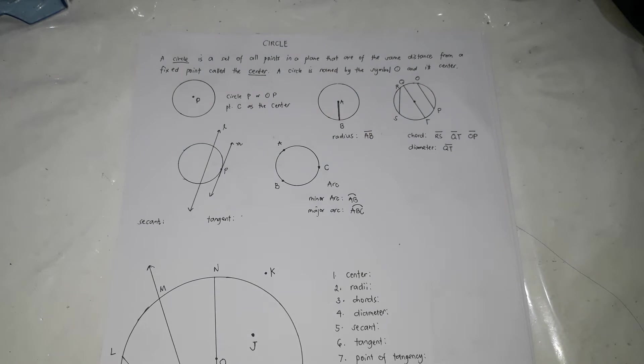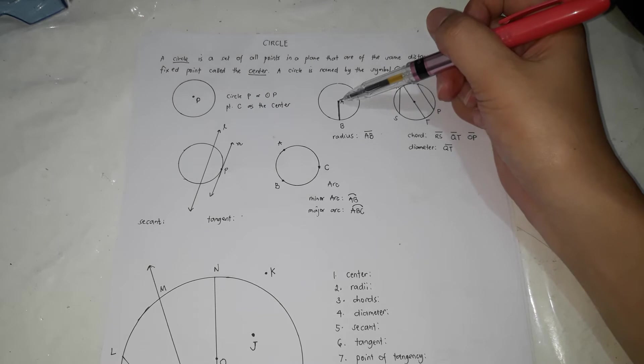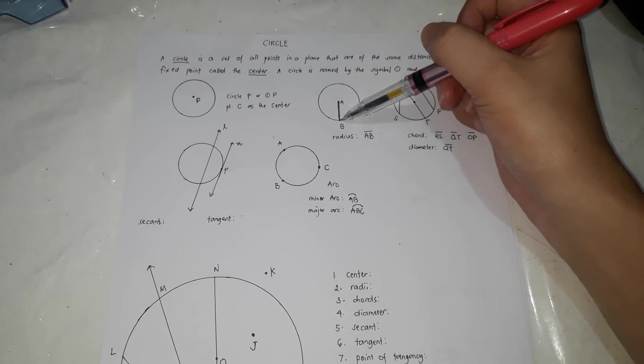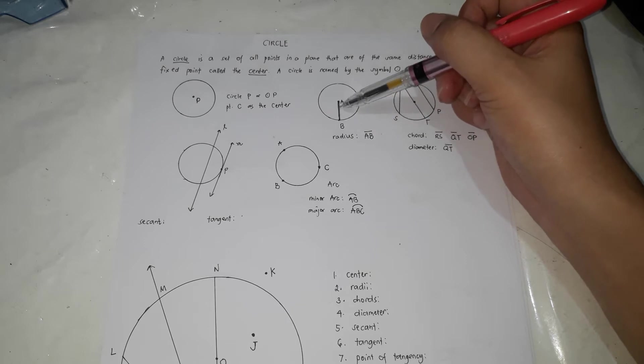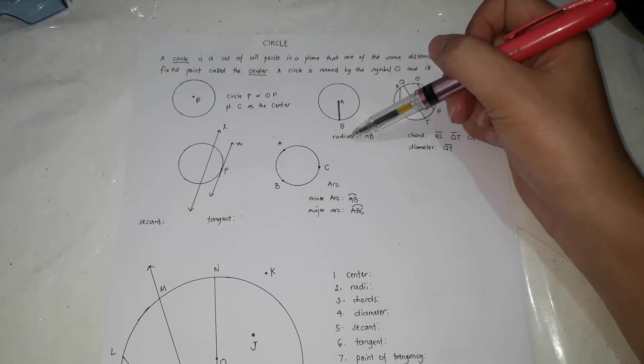The first one is the radius. The radius is a line segment from the center towards any point on the circle. So if this is the center, point A, and this is a point on the circle, if you connect that by a line segment, that's called radius.